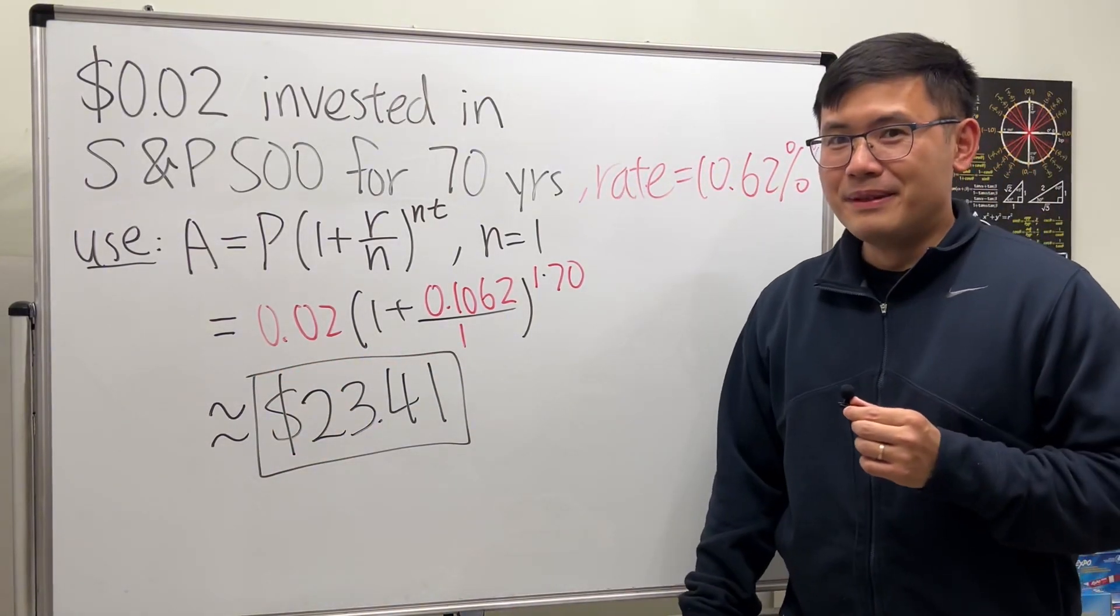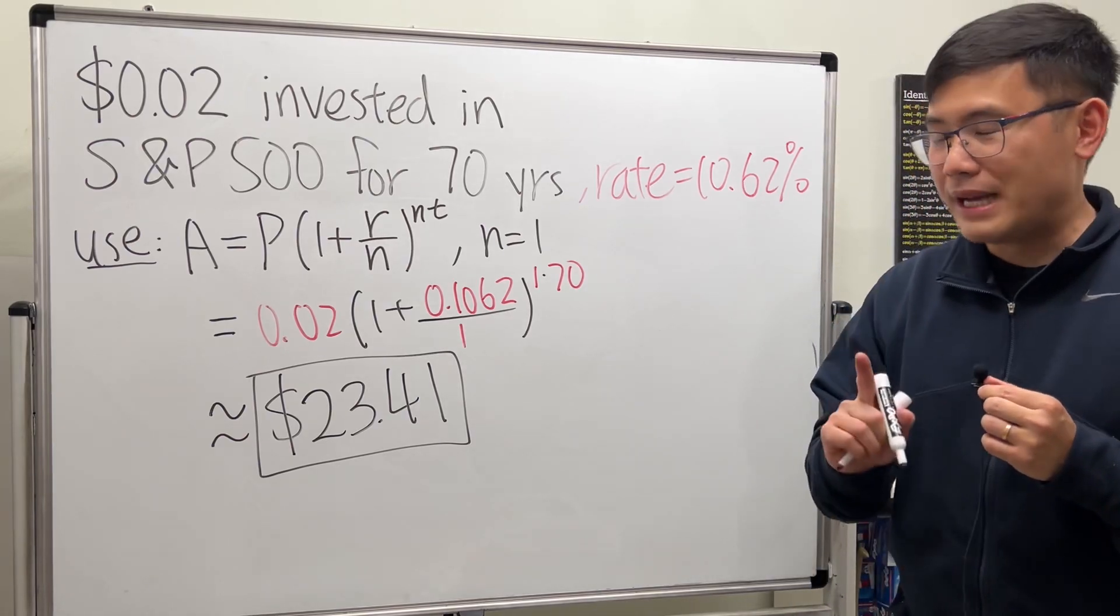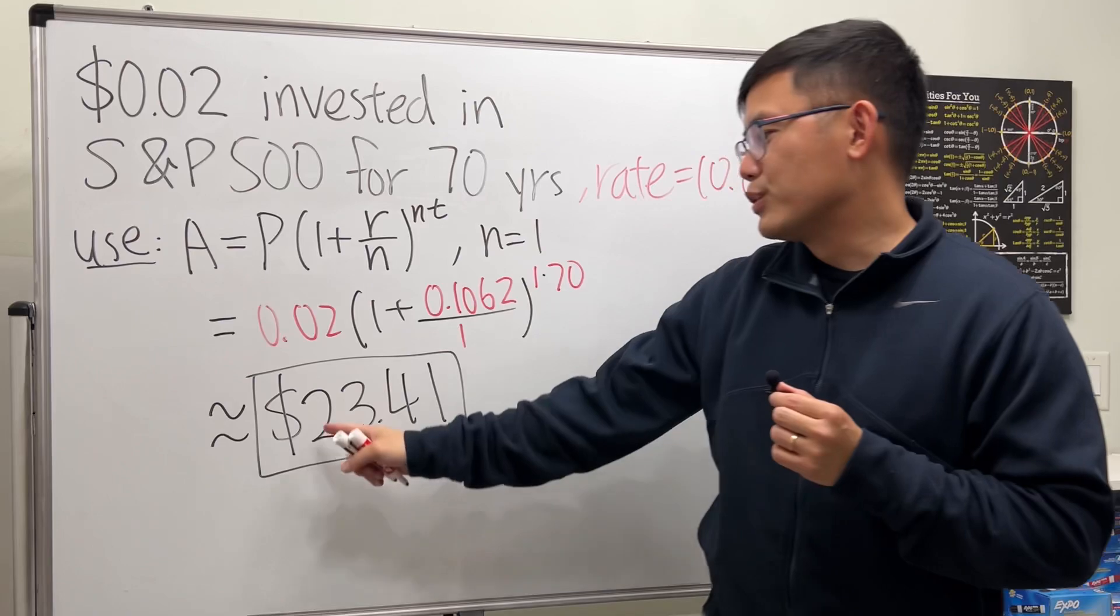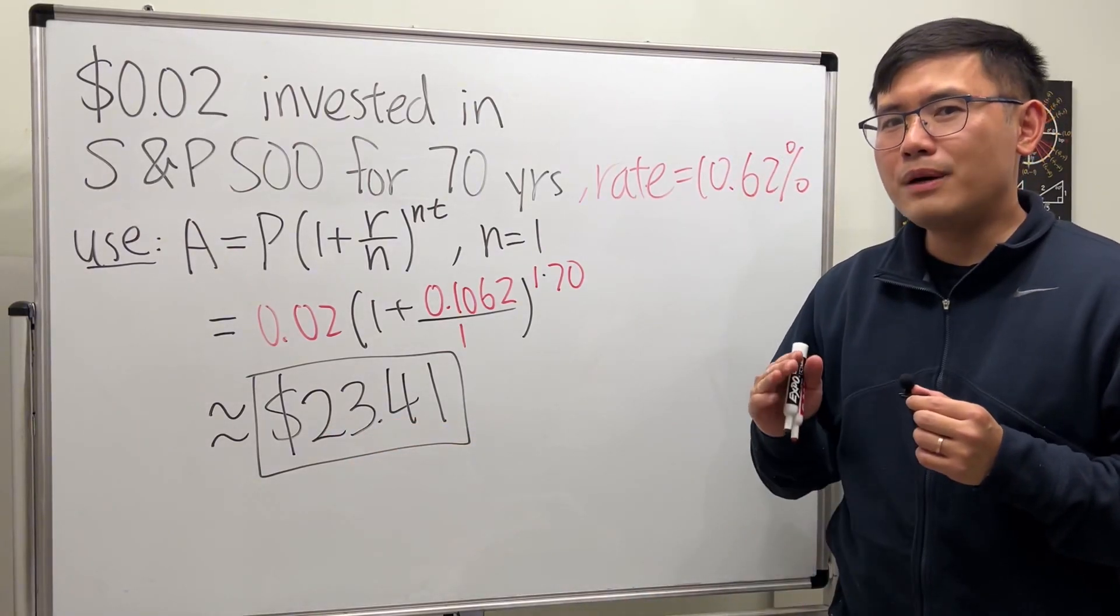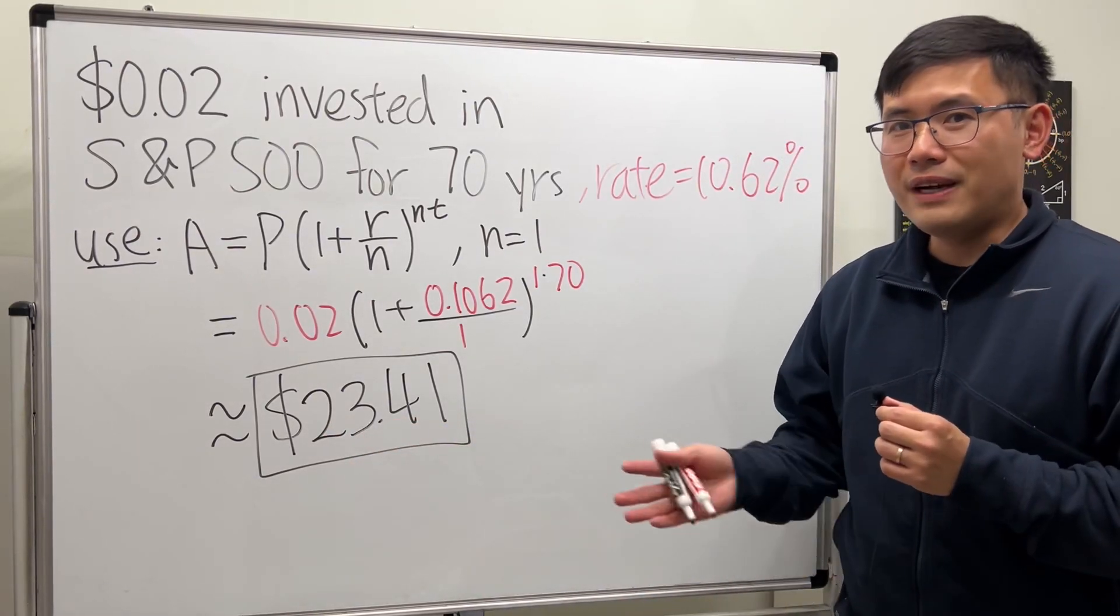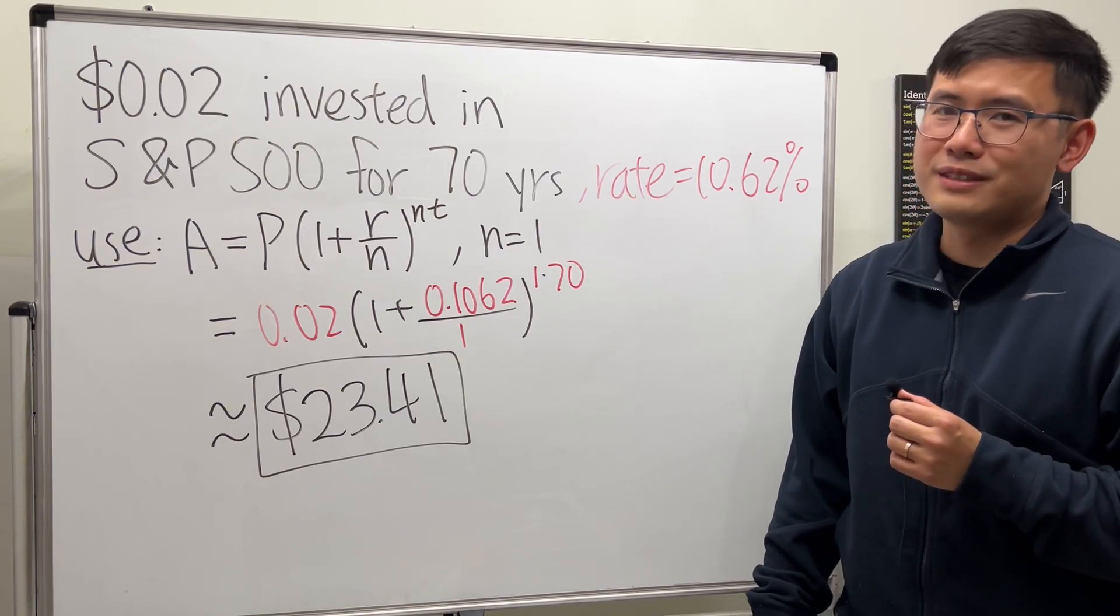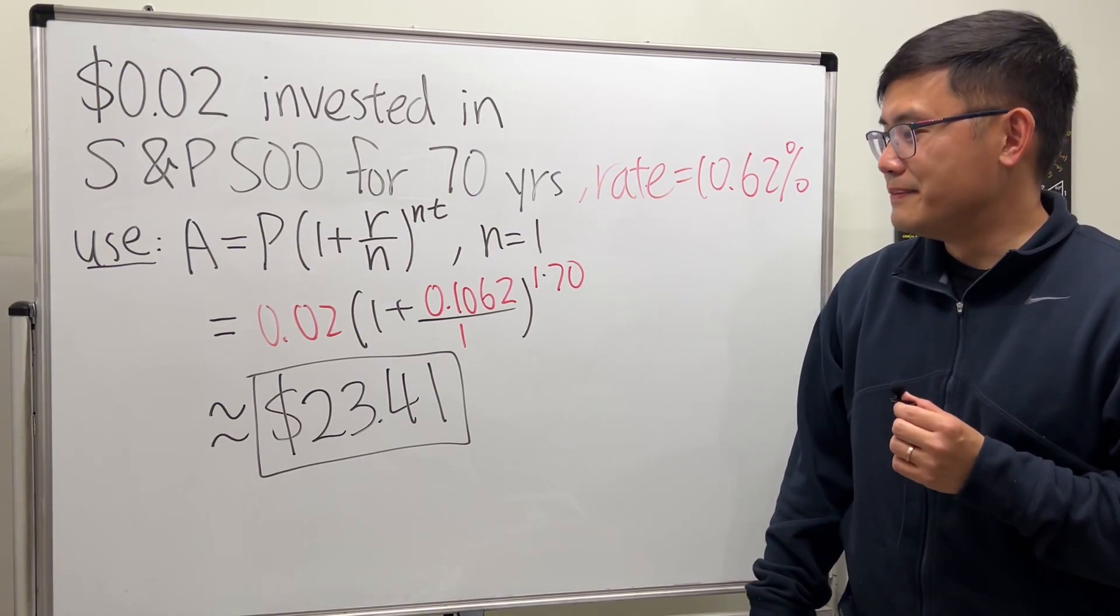Yeah, buy the dip low! It goes from two cents to 23 dollars, so it's about a 1000 times - in fact, it's a lot more than that right, 1100 something times. Yeah, 23 dollars and 41 cents.